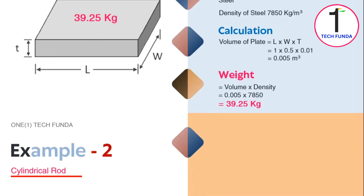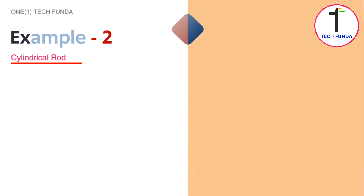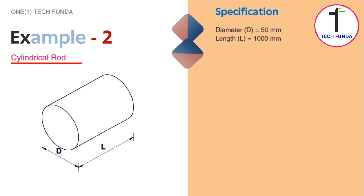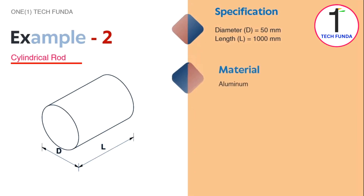Now let's look at the second example: a cylindrical rod. The specifications are as follows — diameter is 50 mm and length is 1000 mm, and the material is aluminum. First, we will convert all dimensions into meters, and the density of aluminum is 2700 kg per cubic meter.